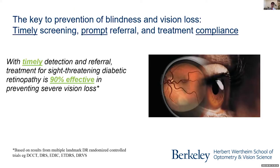Several things have to align in order to prevent someone from going blind or losing their vision: timely screening, prompt referral, and treatment compliance. If all those things work well, we have a 90 to 95% effectiveness in preventing someone from losing vision for the rest of their life. The key is timeliness, and that's our reason for being — we want to be there at the point of care where we capture patients and screen them to see who needs that timely and prompt referral.